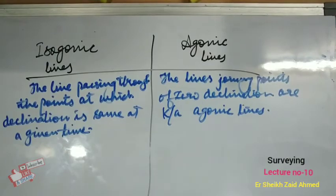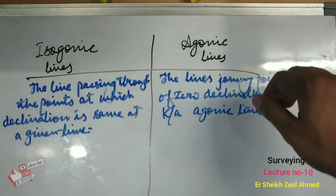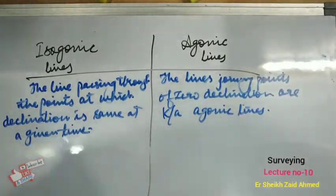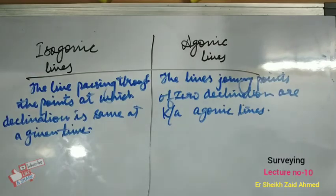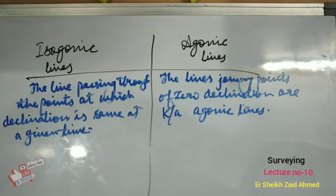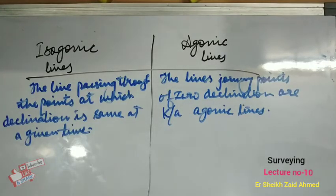The isogonic lines do not form complete great circles — they radiate from the south and north magnetic regions and are quite irregular near geographical poles. There are usually four types of variations in declination that have been identified.